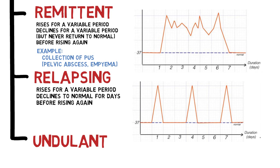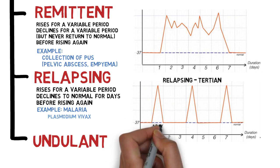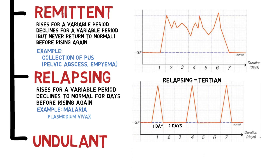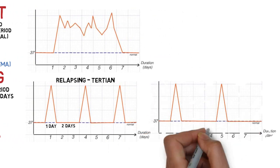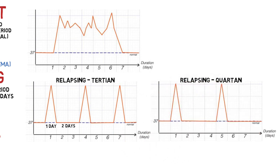The fourth pattern is relapsing fever, where temperature rises for a variable period before declining to normal for a certain number of days and rising again. Malaria is a classical example. Malaria caused by Plasmodium vivax shows tertian fever — one day of fever followed by two days of normal temperature before the fever starts again. Malaria caused by Plasmodium malariae shows quartan fever — one day of fever followed by three days of normal temperature.